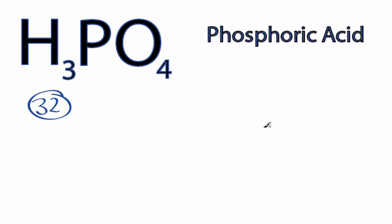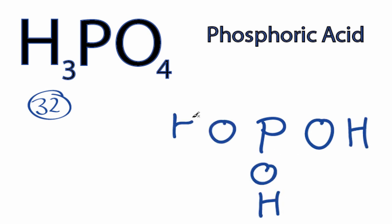So we'll put phosphorus at the center, that's the least electronegative, and then we'll put OH groups, there's 1, 2, 3, and then we have an additional oxygen here.